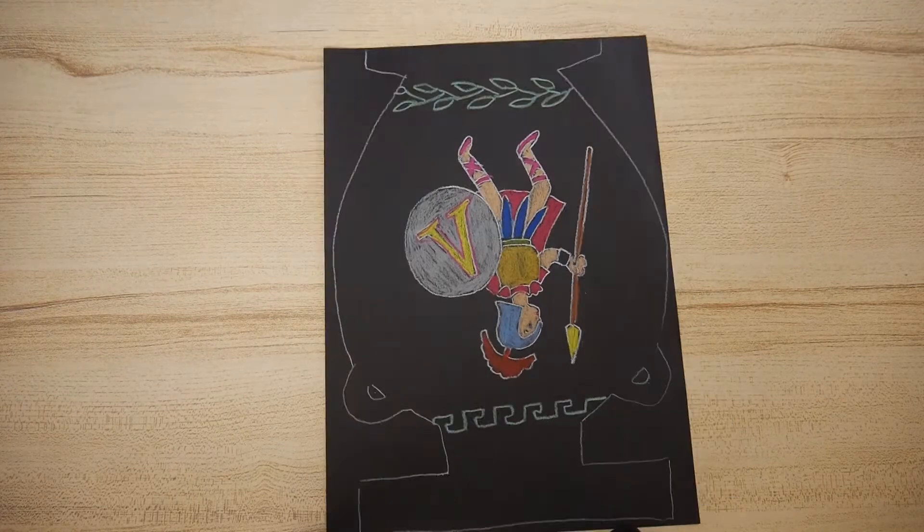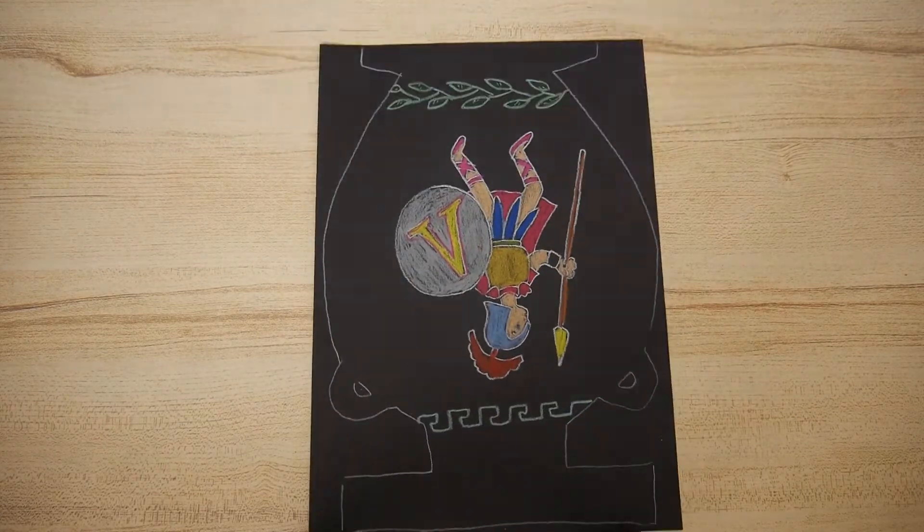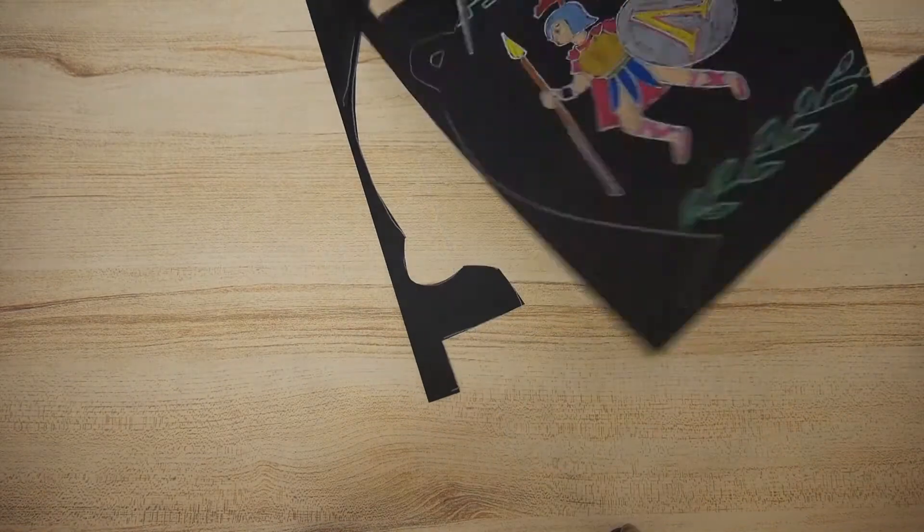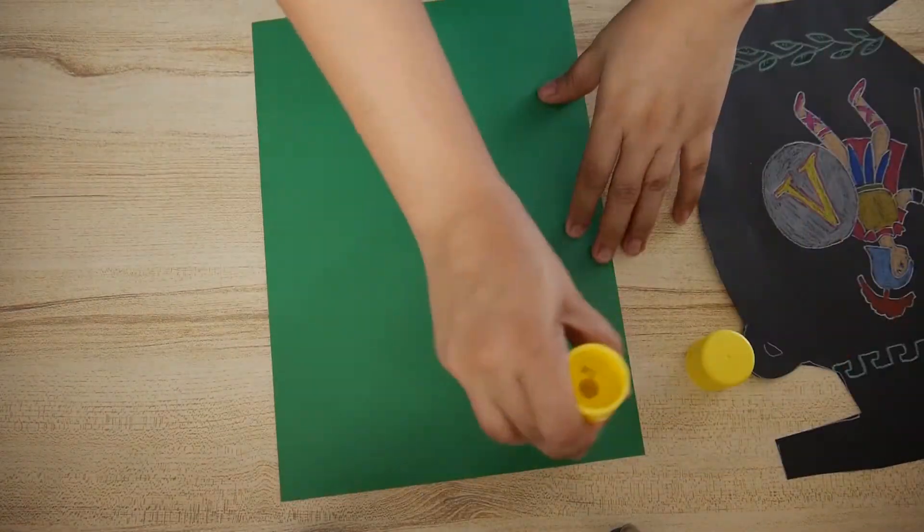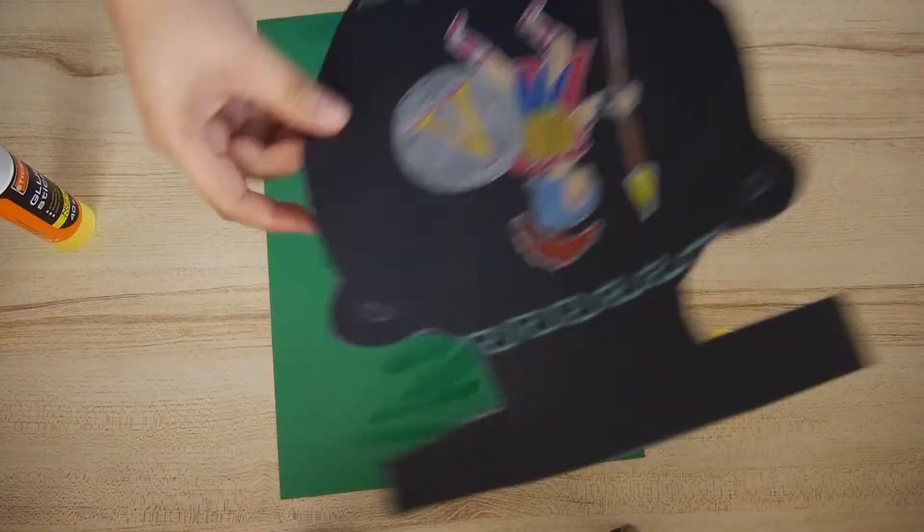I drew a Spartan warrior. Cut out the amphora shape and glue it on a separate piece of paper.